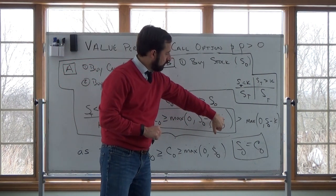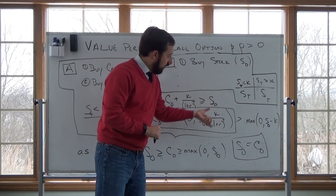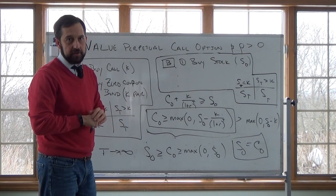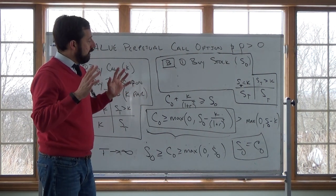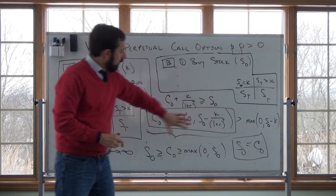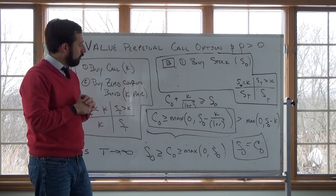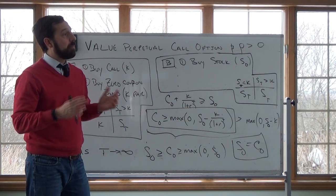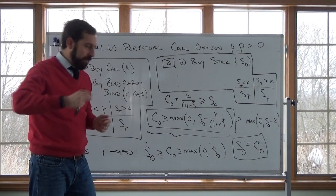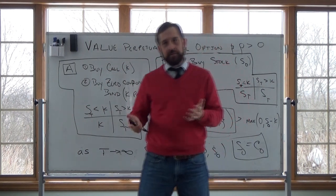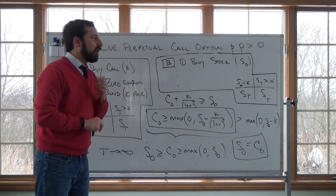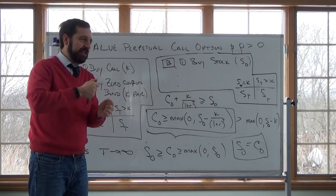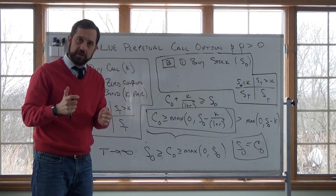That's an interesting result. But more important, at least for me, is using this inequality to build intuition. A lot of times students try to memorize what the Greek values should be — for example, that rho for a call option should be positive and rho for a put option should be negative. I never try to memorize these things; I always have some intuition so that if I happen to forget at a given moment, I can just run through the intuition and know what the value should be.